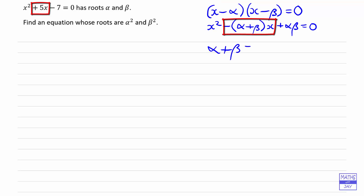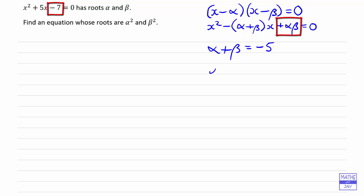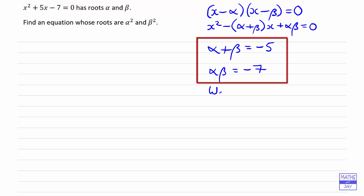So comparing this with the given equation, alpha plus beta must be equal to — being careful of the signs — minus 5, and the product alpha beta, looking at the constant term, must be negative 7. And we need to think about what we want.